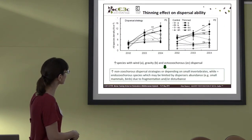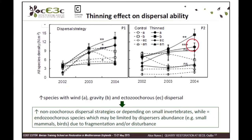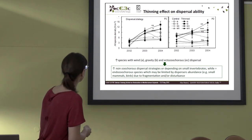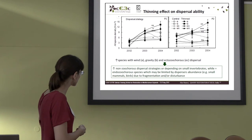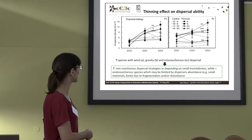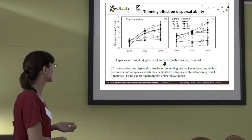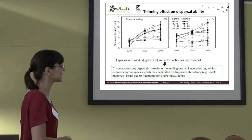Looking at dispersal strategy, we saw an increase in animal-dispersed species, as well as in barochorous species — those dispersed by gravity — and also in epizoochorous species, which include ant dispersal. We did not find any effect on endozoochorous species — those needing small mammals or birds to disperse — which may be due to lower abundance of these dispersers in the terraces, and also because ongoing exploitation causes some disturbance.